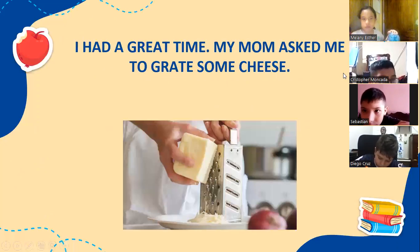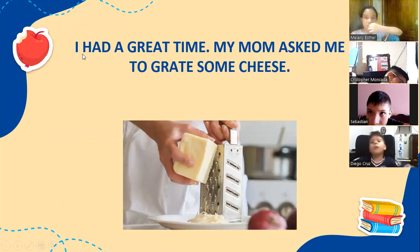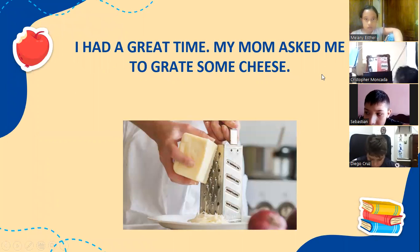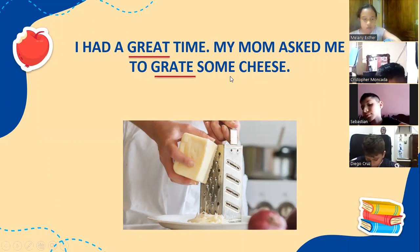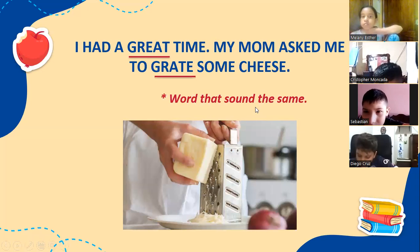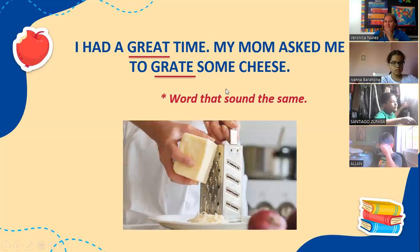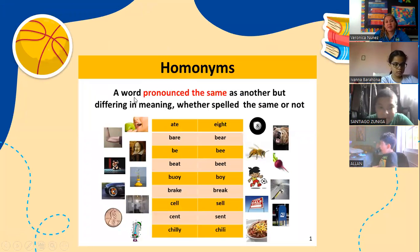Now page 174 is easy peasy. I had a great time. My mom asked me to grate some cheese. What are the two homonyms? Great and grate. So homonyms are words that sound the same but have different spelling and different meaning. Yes, different spelling and different meaning. Homonyms are words pronounced the same as another but different meaning, whether spelled the same or not.